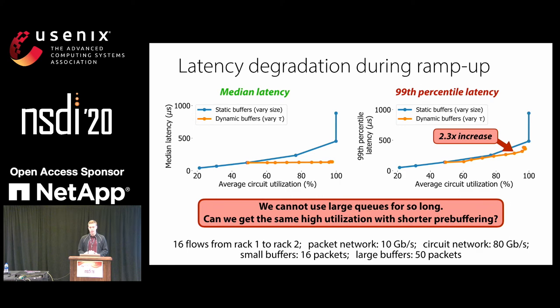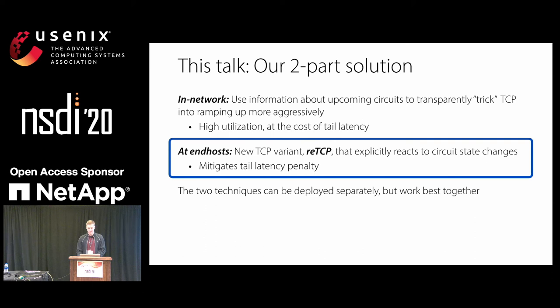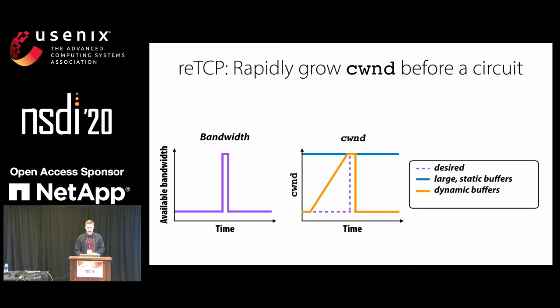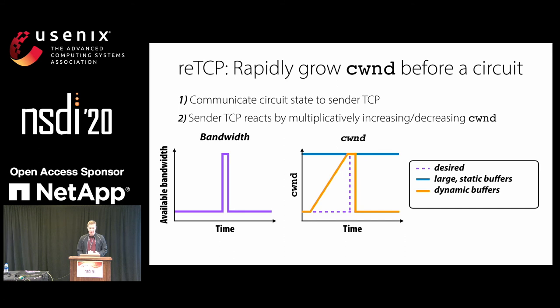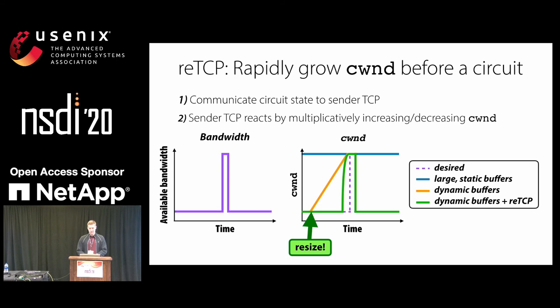So how can we decrease the amount of pre-buffering even further — getting the same utilization with less pre-buffering? This brings in our second technique, RETCP. The idea is to explicitly and aggressively grow the congestion window by involving the sender TCP stack. We communicate circuit network state to the sender TCP, which then multiplicatively increases its congestion window in advance of the circuit when buffers are resized. This produces a much more aggressive ramp-up, reaching the ideal congestion window faster, so we can resize immediately before the circuit goes active rather than far in advance.